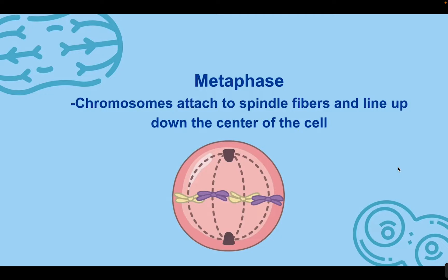The next stage is metaphase. The spindle fibers attach to the chromosomes at the center region called the centromere, and they line up the chromosomes through the equator, or center, of the cell. This is students' favorite to remember: metaphase, meta-middle — you can find the chromosomes in a straight line across the center of the cell. Even under a microscope, a fairly straight line down the center is pretty clear.